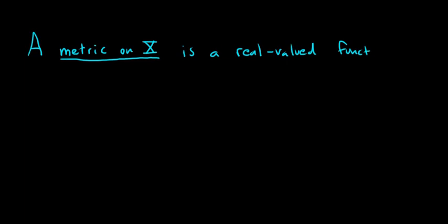A metric on X, where X is a set - we're going to define what this means. A metric is a real-valued function d (d for distance) defined on X×X, the Cartesian product. It takes an ordered pair and sends it to a real number, and has the following properties.